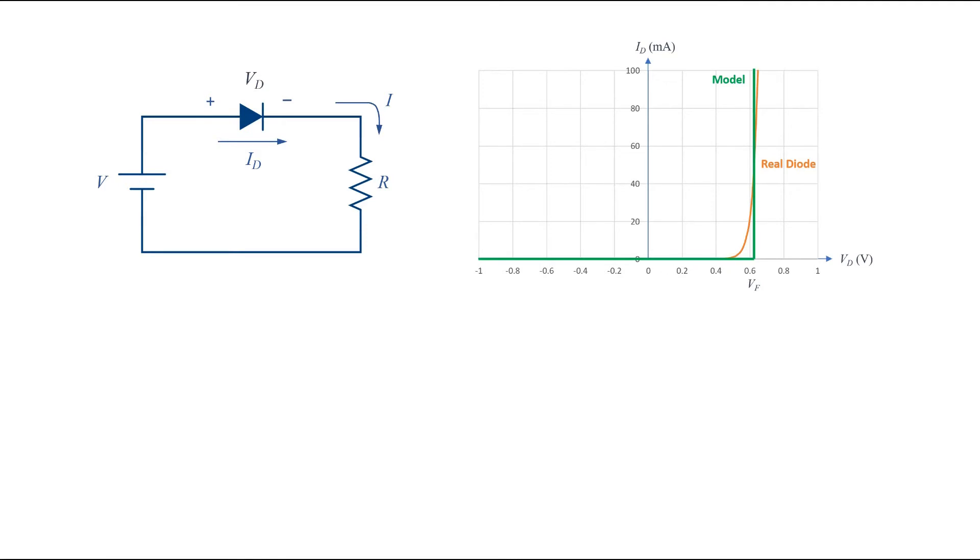The model consists of two segments. When the voltage is smaller than Vf, the current is 0. This has a good match with the real diode, because its current is very small, except when the voltage is larger than the cutoff voltage.